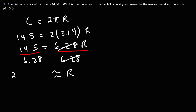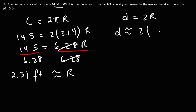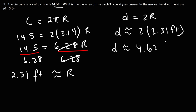The unit for circumference is feet, so the radius is also in feet. Now that we have the radius, the diameter is simply 2R — twice the value of R. So it's 2 times 2.31: 2 times 2 is 4, and 2 times 0.31 is 0.62. The diameter of this circle is approximately 4.62 feet.